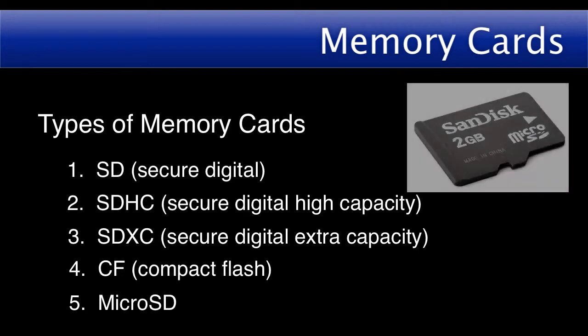Micro SD Memory Cards were initially a popular method of storing images in mobile phones. In actual size, they're the smallest commercially available memory card at 15x11x1mm, but they can store up to 2GB of information. The micro SDHC versions are available and able to store much larger files from 4GB to 30GB.